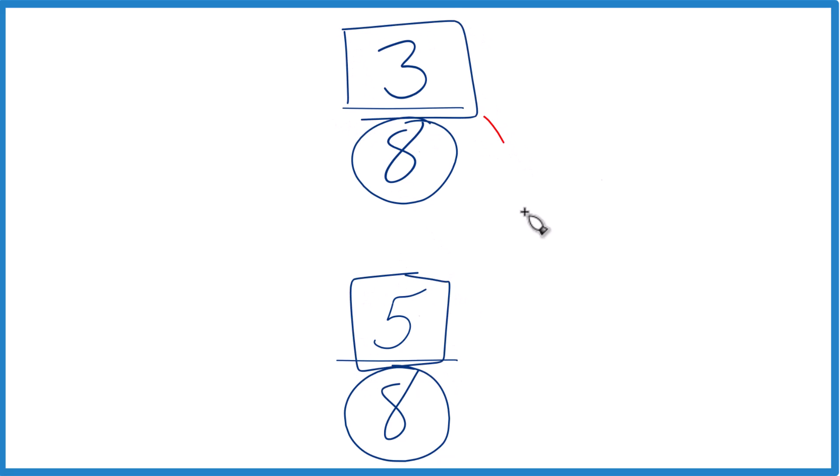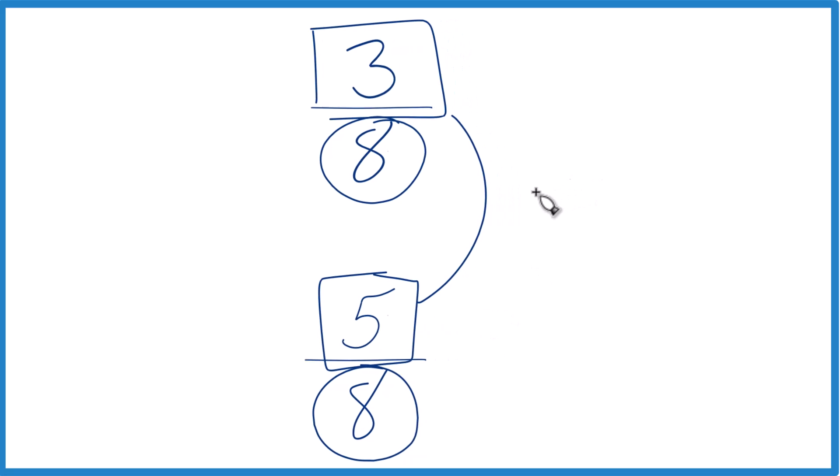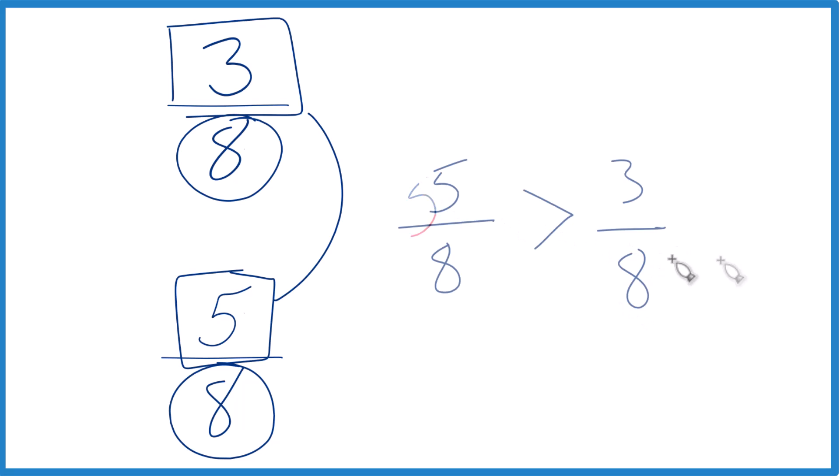So we could compare the 3 and the 5. Which one is greater? 5 is greater than 3. So since 5 is greater than 3, we can say that 5 eighths is greater than 3 eighths, which is what you would find if you converted these to decimals on a calculator and compared the decimals.